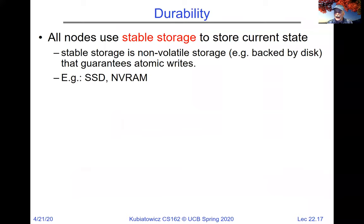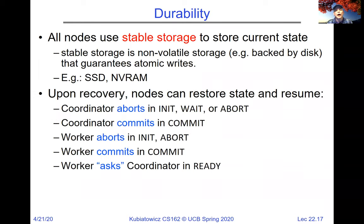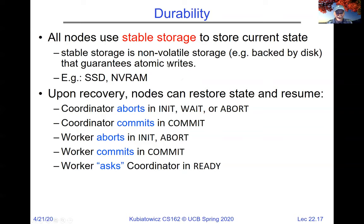All nodes have to use stable storage to store the current state — non-volatile storage like a disk, SSD, or NVRAM. On recovery, nodes can restore state and resume. The key thing is that no matter when and how nodes crash and come back up, if we do the right thing with the log, we'll always maintain our atomic behavior where they all either decide to commit or they all decide to abort.